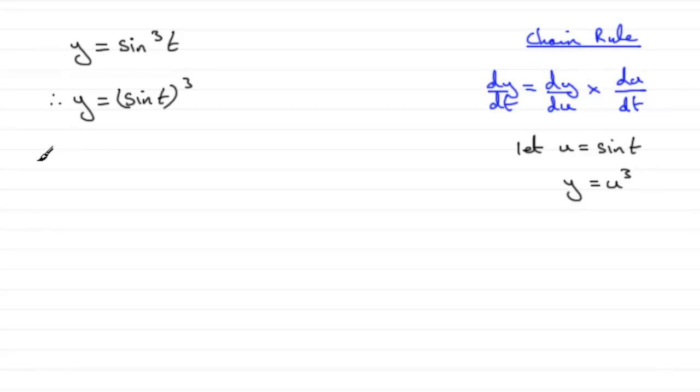When it comes to working out what dy by dt is using the chain rule, we've got to do dy by du first of all. If you differentiate y with respect to u, you're going to get 3u squared. So that's going to be 3 multiplied by u squared. But u is sine t, so that's going to be sine t all squared. Then we've got to multiply it by du by dt. But if u equals sine t, du by dt is going to be cos t. So if we clean this up, we've got 3 sine squared t cos t.